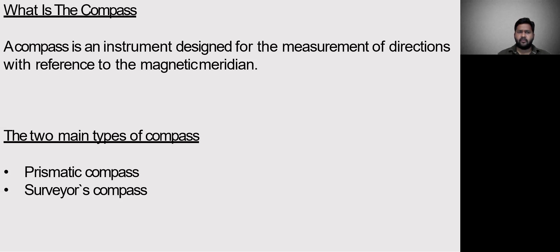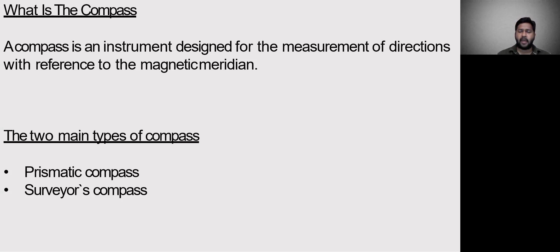Whatever directions we are measuring with the help of this compass, we take that direction with reference to the magnetic meridian. It is similar to an angle, but the only difference is that whatever angle you are measuring, it will be measured with reference to magnetic north — that is, the magnetic meridian. We call that measured angle a bearing. Bearing will be discussed in further coming classes, but with the help of this compass, we measure bearings with reference to the magnetic meridian.